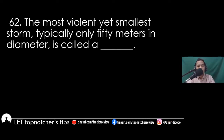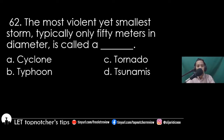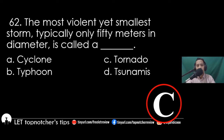Item 62: The most violent yet smallest storm, typically only 15 meters in diameter, is called a blank. A) cyclone, B) typhoon, C) tornado, D) tsunamis. The best answer is letter C, tornado.